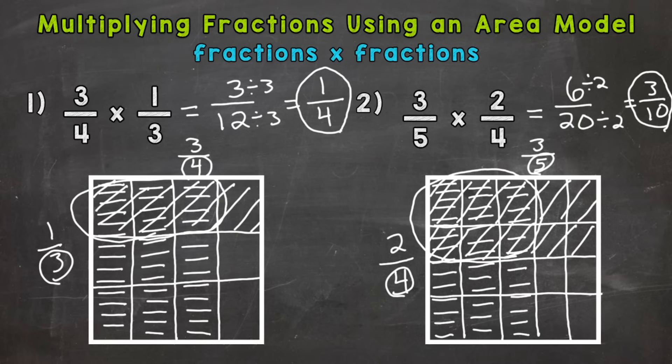Now when we multiply a fraction by a fraction, we multiply straight across. So we would do three times two is six, and five times four is 20. These area models help us visualize and see what's happening when we multiply a fraction by a fraction.